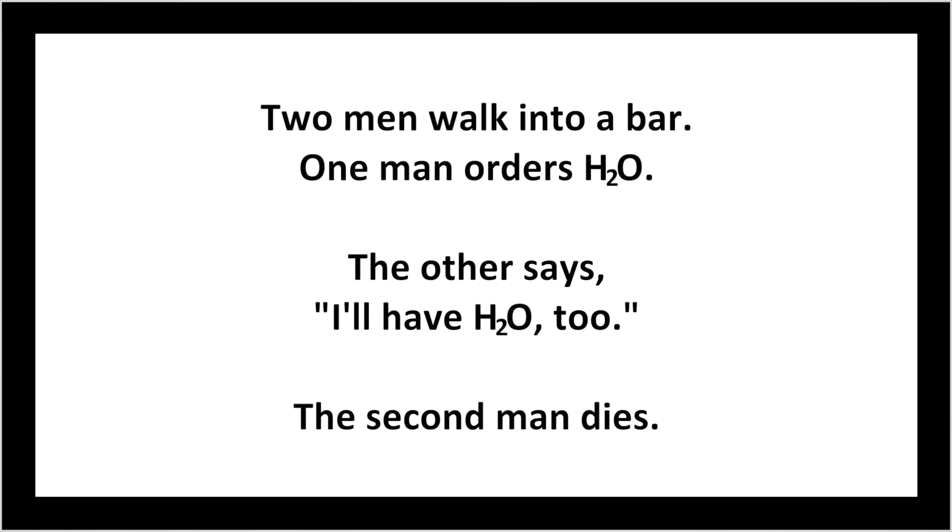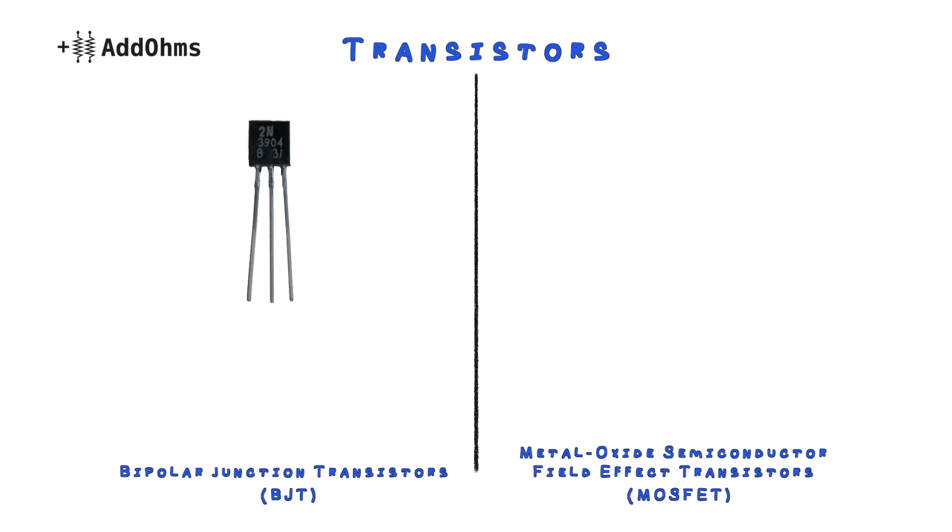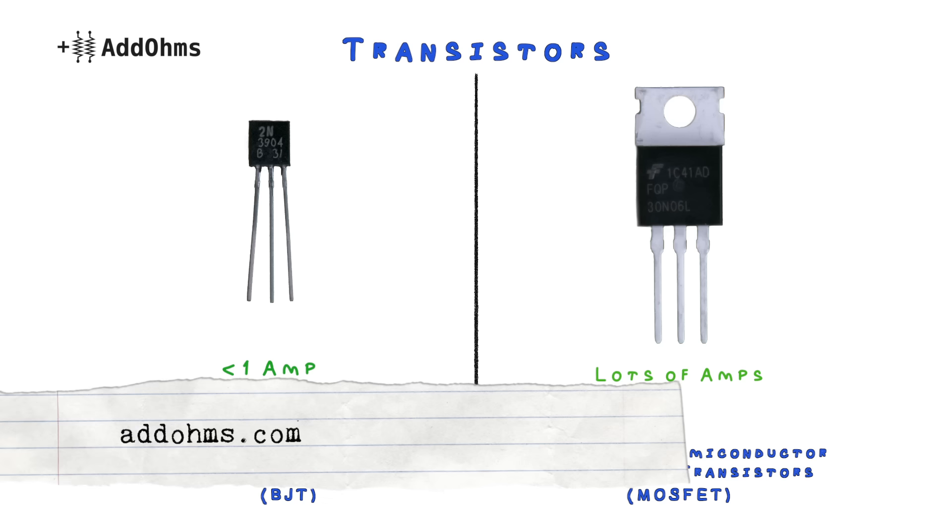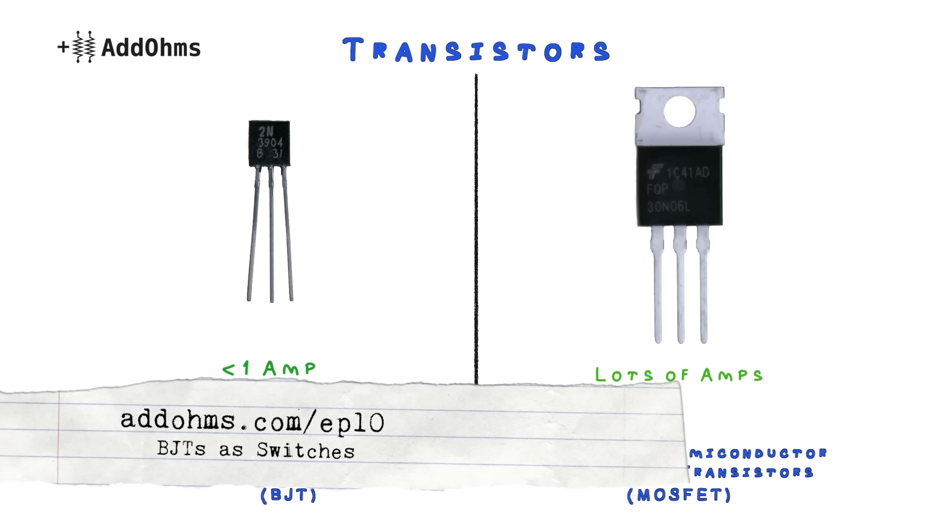This video is part of a two-part series on transistors. The previous one covered bipolar junction transistors, BJTs, while this video covers metal oxide semiconductor field effect transistors, known as MOSFETs. Generally you'll use a BJT for small loads, say less than 1 amp of current, while MOSFETs are well suited for applications with much higher current. For the video on BJTs, see AddOhms.com/EP10. For now, let's move on to MOSFETs.